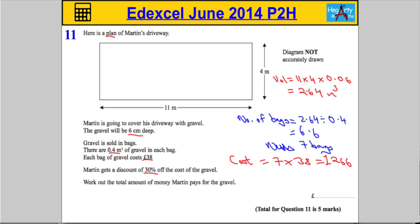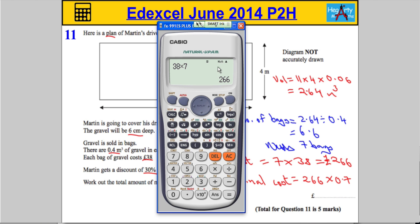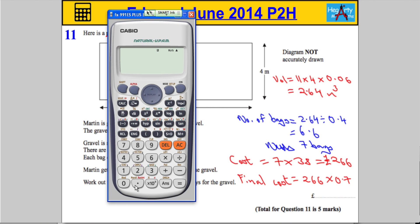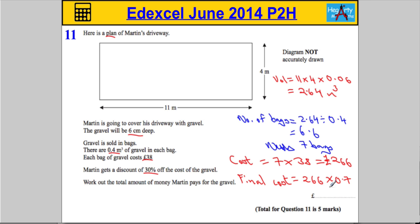And then the last part, it tells us that he gets a discount of 30%, so we need to work out 30% of this and subtract it. Now I'm actually going to do it slightly quicker, so the final cost, I'm going to use a little trick here. If I reduce the payment by 30%, I only have to pay 70%, so I need 70% of this. So 266 times by, you can do 70 over 100 or 0.7. You may need to look up a tutorial if you're unsure about how we've done that. That's using a percentage as a multiplier. So 266 times by 0.7 is going to give us £186.20.